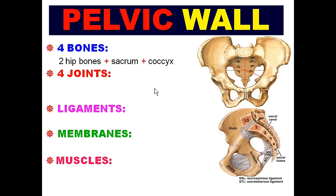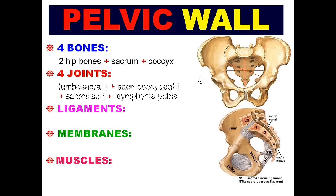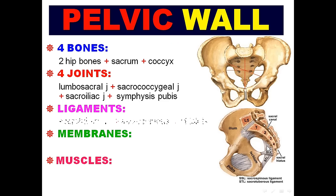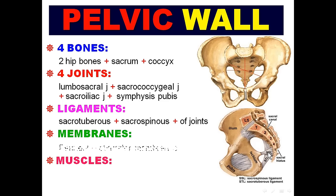Regarding the joints between the bones, we have the pubic symphysis, the lumbosacral joint, the sacrococcygeal joint, and the sacroiliac joint. Then we have ligaments fixing the hip bone with the sacrum: the sacrotuberous ligament and the sacrospinous ligament.